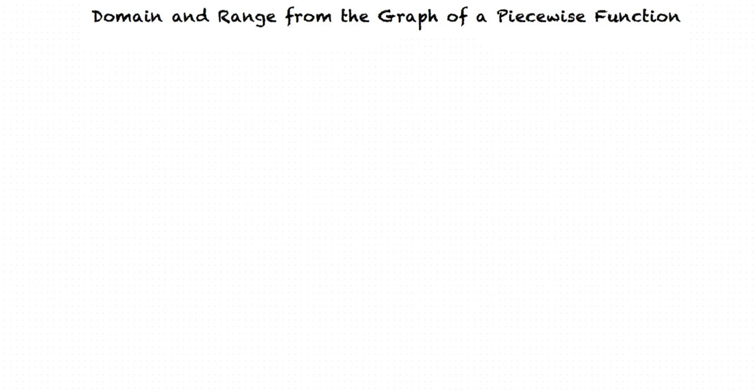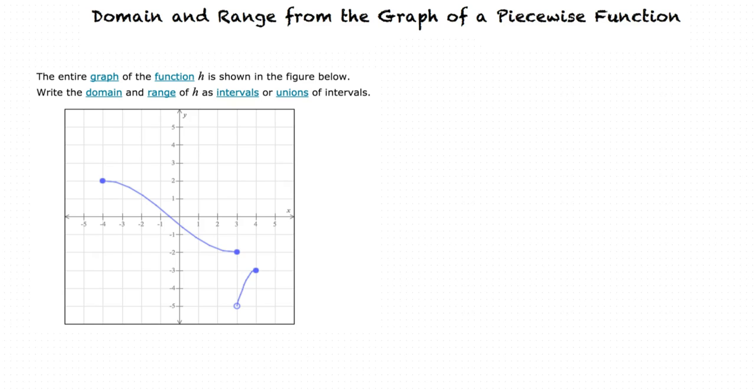Let's look at an example problem. Write the domain and range of the function h as intervals or unions of intervals. We can determine the domain and range by looking at the graph of the function. First, let's determine what the domain of this function is. If we look at the x-value of where the function starts, we can see that it is at x equals negative 4, and the x-value of where the function ends is x equals 4.